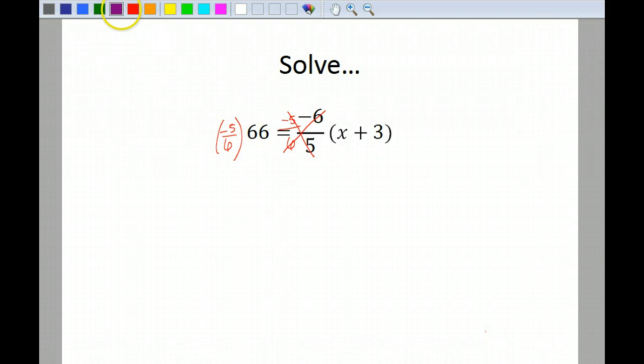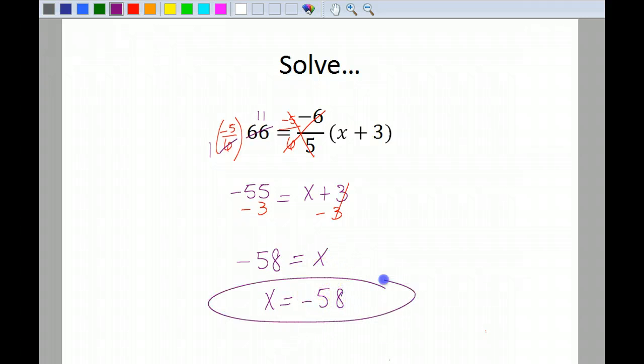Now I can simplify. 6 will go into 6 one time. 6 will go into 66 eleven times. Now what is negative 5 times positive 11? That's negative 55 is equal to x plus 3. Now I'm going to subtract 3 from both sides. And negative 58 is equal to x. So we generally would write it as x is equal to negative 58. And that's my answer.